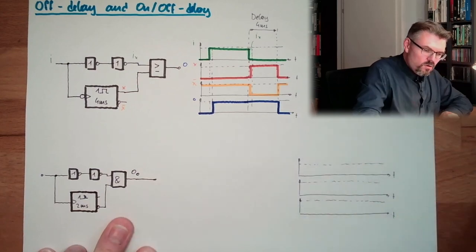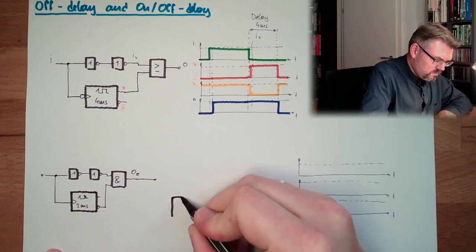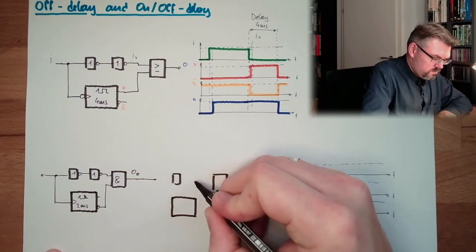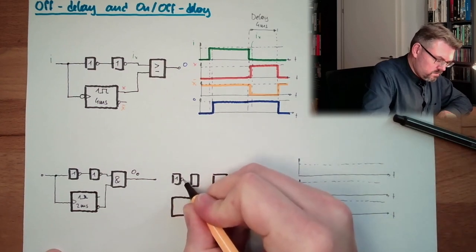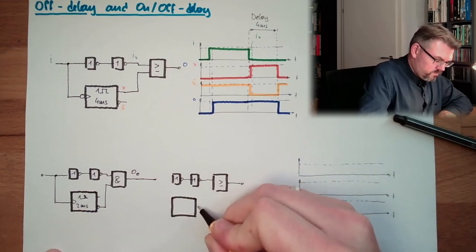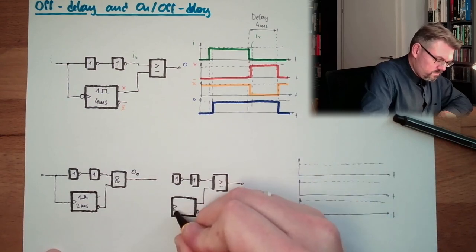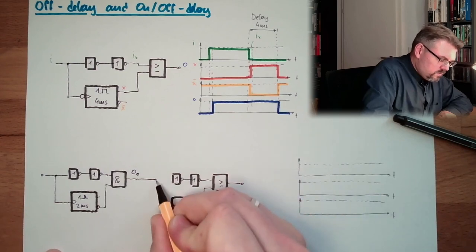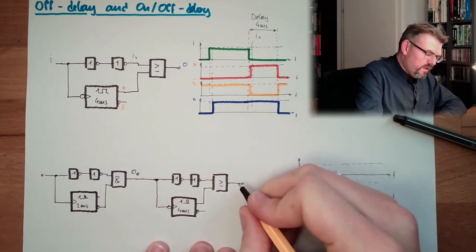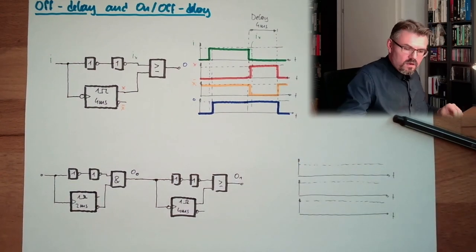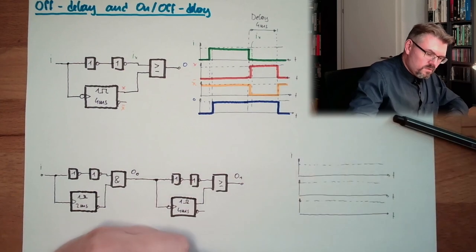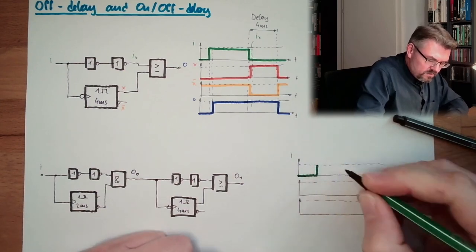So, with this, we make exactly this, here is the OR, 4 ms, and NOT. ON delay, OFF delay, here we have our INPUT I. Now, let's see, if the INPUT I, I am not taking into account now the switching times, looking like that.